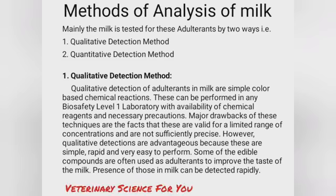Milk is mainly tested for adulterants by two methods: the first is the qualitative detection method and the second is the quantitative detection method. Qualitative detection of adulterants in milk involves color-based chemical reactions. These can be performed in any biosafety level 1 laboratory with availability of chemical reagents. A major drawback is that these are valid for a limited concentration range and are not sufficiently precise; however, they are simple, rapid, and easy to perform.